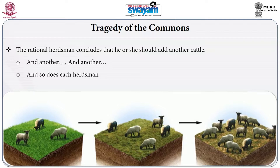Assume the pasture has a limited regeneration capacity and can support only 30 animals. Once individual A adds an animal and increases income, others will follow. In a few months all 10 households have three animals each, totaling 30 animals. Each herdsman then has an incentive to add yet another animal, so individual A increases from 3 to 4 animals.